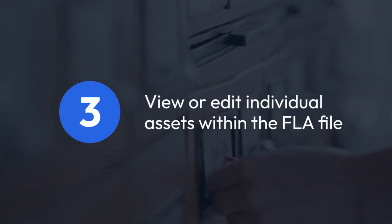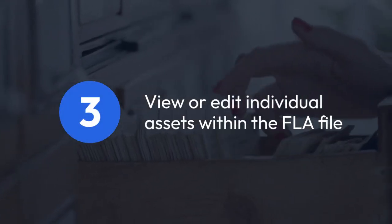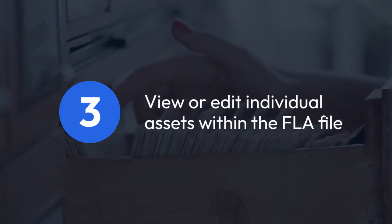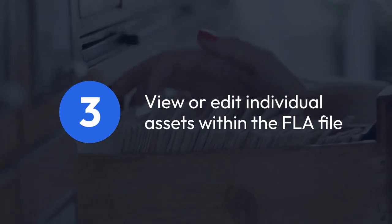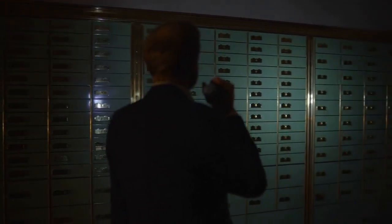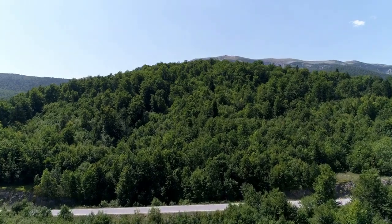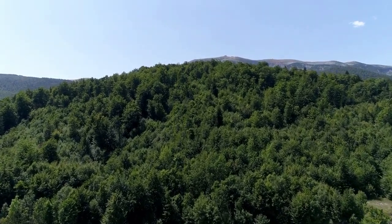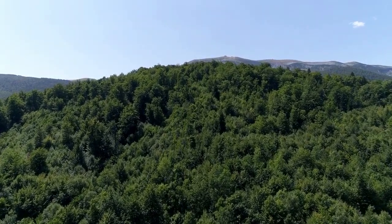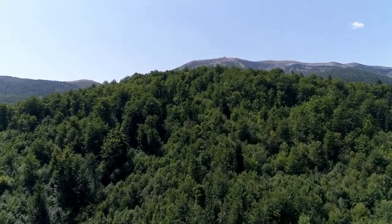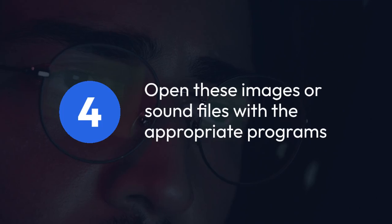Method 3: If you need to view or possibly even edit individual assets within the FLA file, like images or sounds, you may be able to extract them. Many FLA files store these assets as separate files within a folder associated with the project. Check the directory where your FLA file is saved, as the assets frequently reside in a subfolder alongside the main FLA file. If you find them, you can open these images or sound files with the appropriate programs.